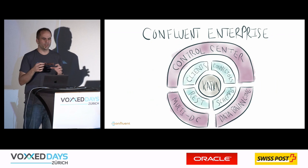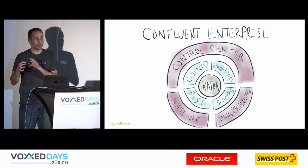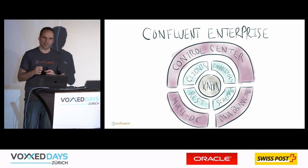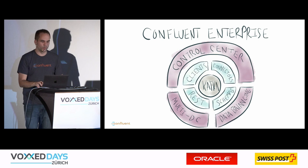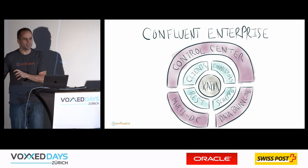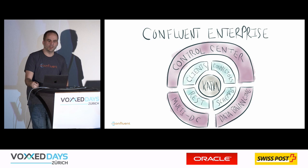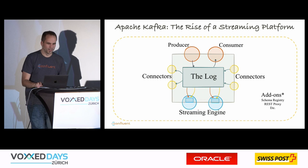Confluent also builds enterprise tooling: end-to-end monitoring — a key challenge in distributed Kafka deployments where finding lost messages, duplicates, or latency issues requires more than Grafana and JMX; data balancing between brokers; and a multi-data-center replicator for use cases like disaster recovery or aggregating different Kafka clusters.